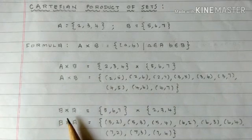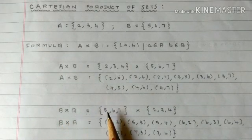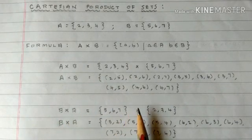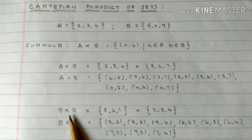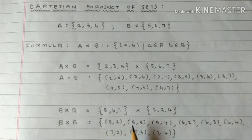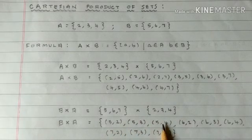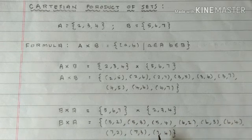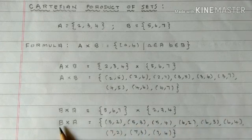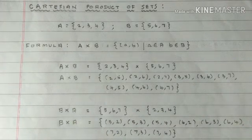Now B cross A: B cross A is {5,6,7} cross {2,3,4}, giving: (5,2), (5,3), (5,4), (6,2), (6,3), (6,4), (7,2), (7,3), and (7,4). In every pair the first element is from set B because it is B cross A. That is the account on Cartesian product.